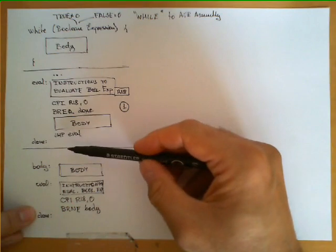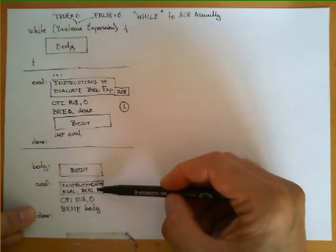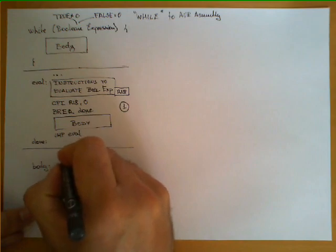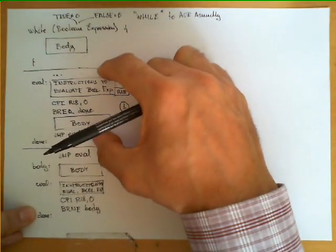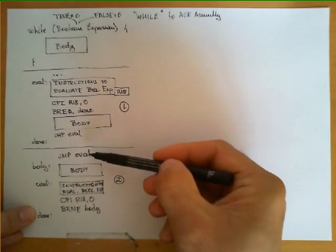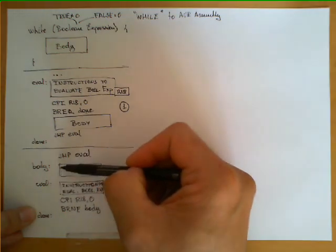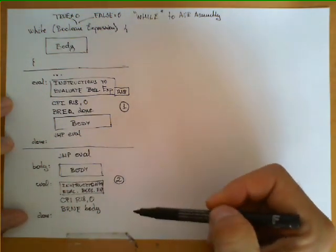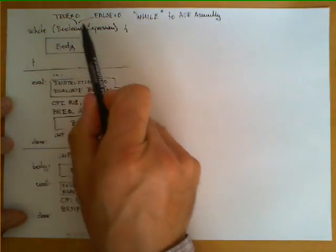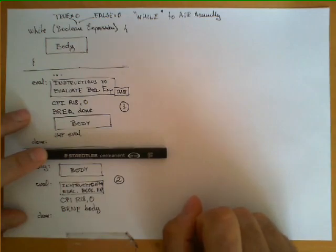There is one small detail. If we imagine an assembly program executing, when we first reach the body we shouldn't execute it immediately — we should first evaluate the boolean expression and then go back to the body. This is easy to fix with an unconditional jump to eval at the beginning. With this instruction, we replicate exactly the same behavior as option one. Construction number two has the advantage that if we implement a do-while statement instead of a while, the structure is exactly the same except we remove the unconditional branch at the beginning.